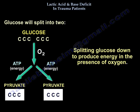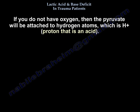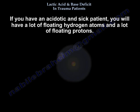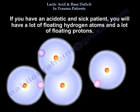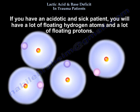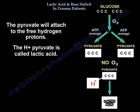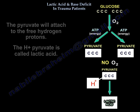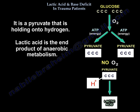When we break down glucose to produce energy in the presence of oxygen, the glucose splits into two separate three-carbon molecules called pyruvate and produces ATP. If you don't have oxygen, then the pyruvate will be attached to hydrogen atoms, which are protons. H+ is an acid. If you have an acidotic, sick patient, there will be a lot of floating hydrogen atoms and protons. The pyruvate attaches to the free hydrogen protons — H+ plus pyruvate is called lactate. So lactate is a pyruvate holding on to hydrogen. Lactic acid is the end product of anaerobic metabolism.